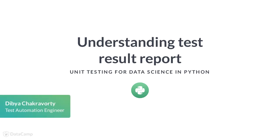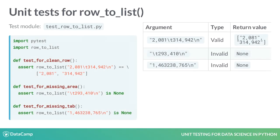In this lesson, we will take a deeper look at the output generated when we run tests. This output is called the test result report and contains information that will help us fix bugs. As an example, we will use the test module TestRowToList.py, which we saw in the previous video lesson.